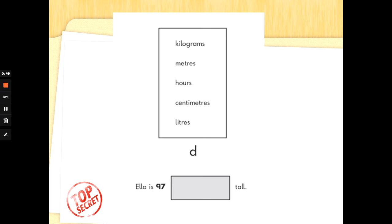So have a look at the words in the box. Kilograms, metres, hours, centimetres, litres. Ella is 97 watt tall. Choose a measurement from the box that you think we would measure height in. Now, think about kilograms. That weighs how heavy something is.